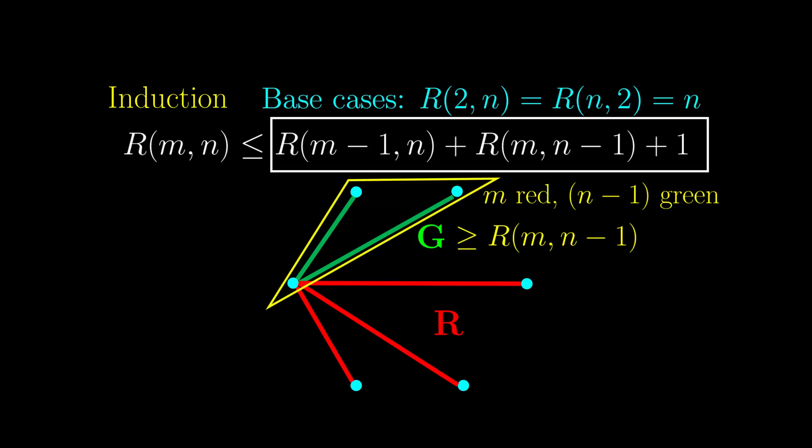Then adding the initial vertex, we can guarantee m red or n green now, because all the n-1 vertices together with this initial vertex would form a group of n vertices all connected in green.